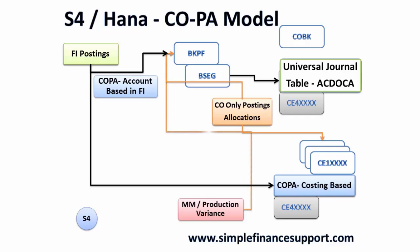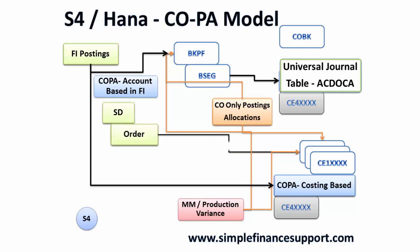For MM variances there is no difference in S/4 HANA: data goes into BKPF and then into the universal journal along with the derived characteristics. For production variances, different types — input variance, output variance, usage variance — still flow into COPA costing-based for detailed gross profit margin analysis, and that does not change. COPA account-based also has a lot of information in the ACDOCA table. For SD, order details still go to COPA costing-based because order details do not go into the universal journal.